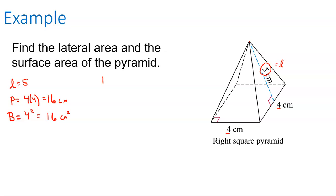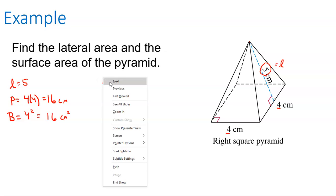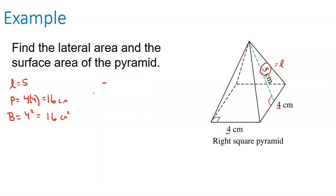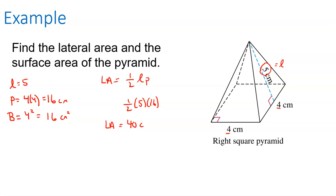Now I'm ready to use the formula. Lateral area for a pyramid is one-half the slant height times the perimeter: one-half times 5 times 16. Half of 16 is 8; 8 times 5 is 40. So my lateral area is 40 square centimeters.